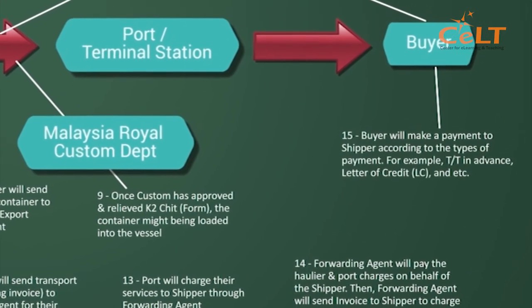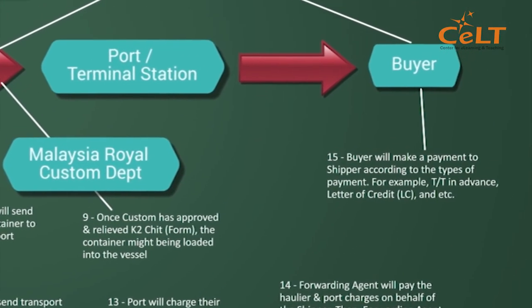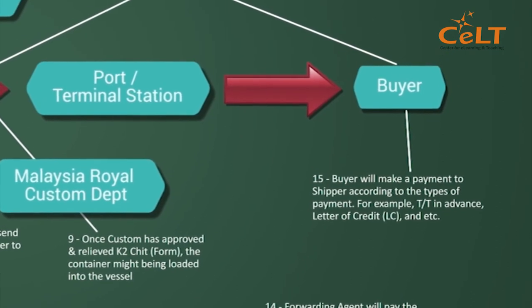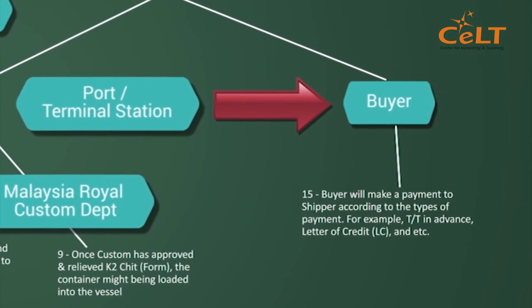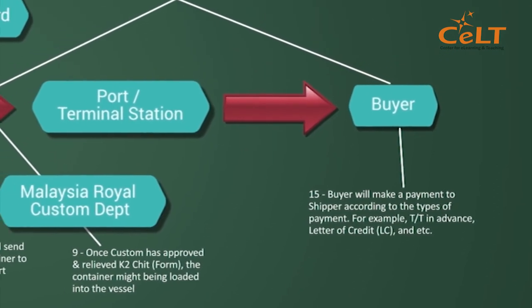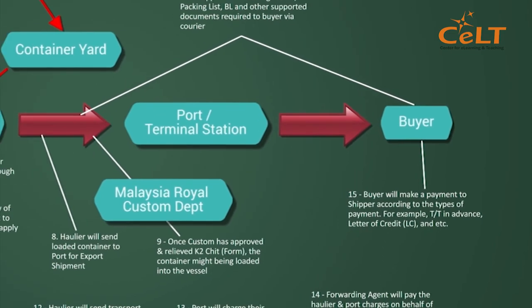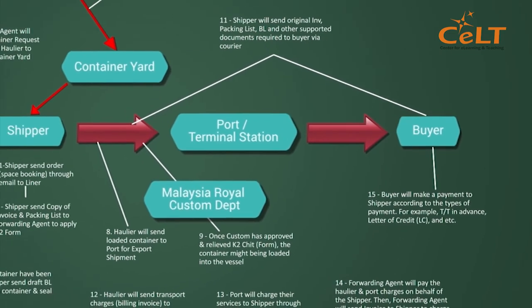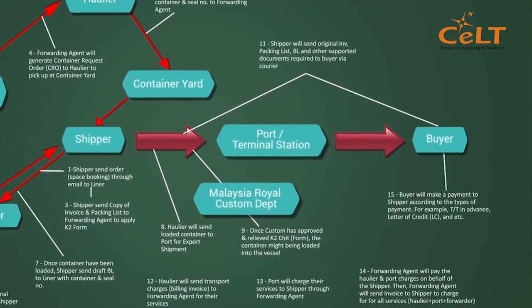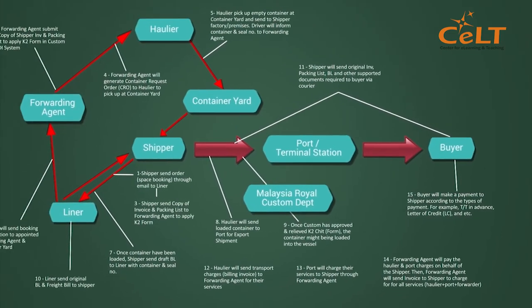Step 14: Forwarding agent will pay the haulier and port charges on behalf of the shipper. Then, forwarding agent will send invoice to shipper to charge for all their services including haulier, port and forwarder. Step 15: Buyer will make a payment to shipper according to the type of payment — for example, D/D in advance, Letter of Credit (LC), and others.